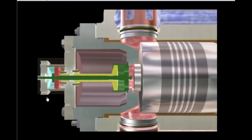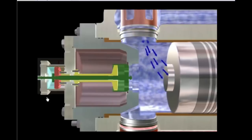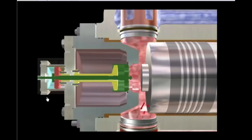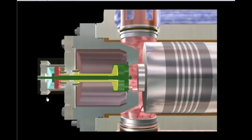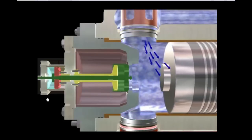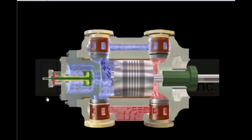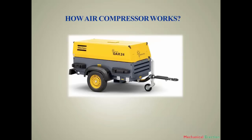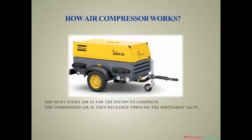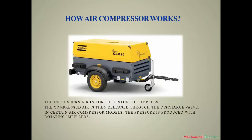For a close view, see again: suction, now compression, now suction, now compression. So I think you understand the principle of the double-acting compressor cylinder. Mainly, an air compressor works in two ways: the inlet sucks air in for the piston to compress it, then the compressed air is released through the discharge valve. In certain air compressor models, pressure is produced with rotating impellers.